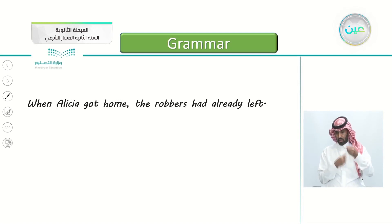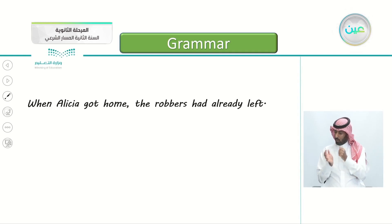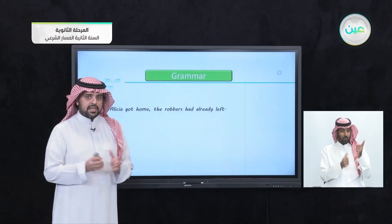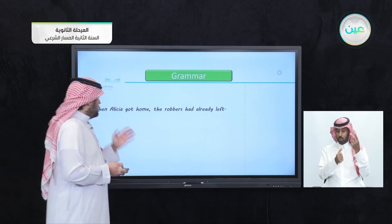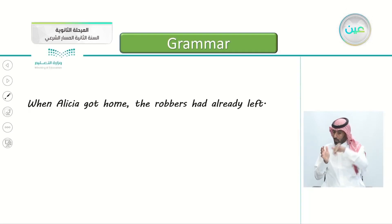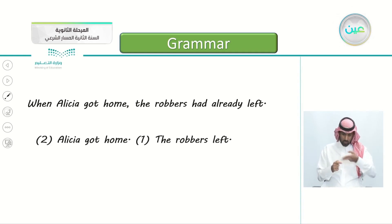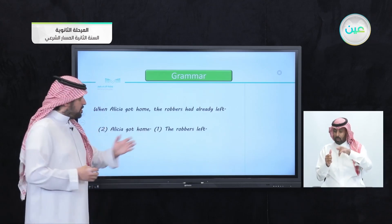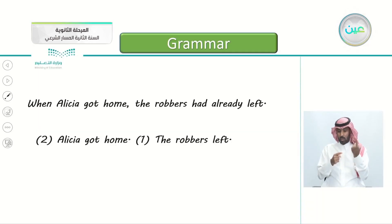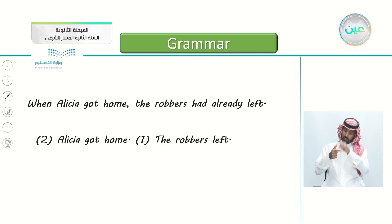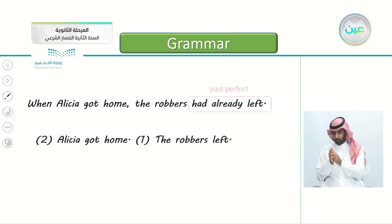Here is another sentence: 'When Alicia got home, the robbers had already left.' How many events do we have? We have two. The first: Alicia got home. The second: the robbers left. Which one happened first? The robbers left — that's number one. Alicia got home — that's number two. This is the chronological order.